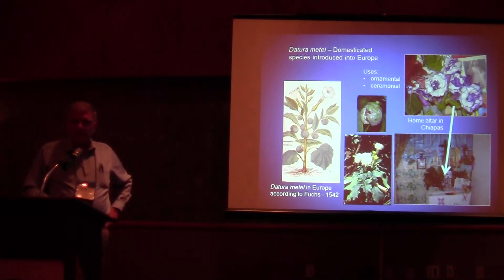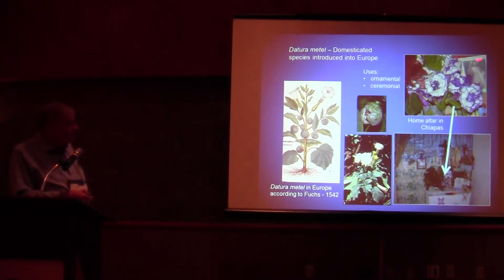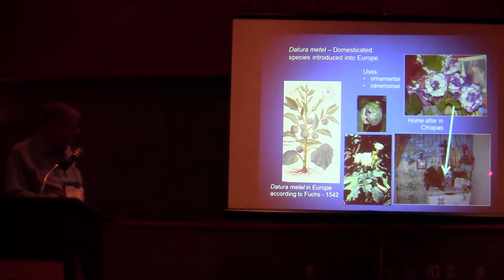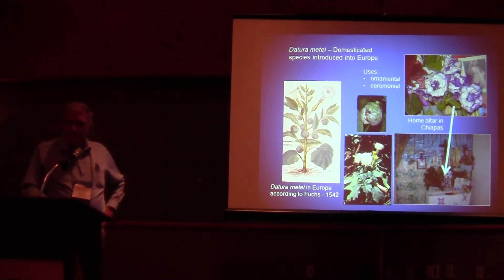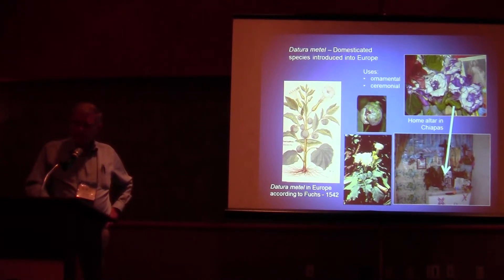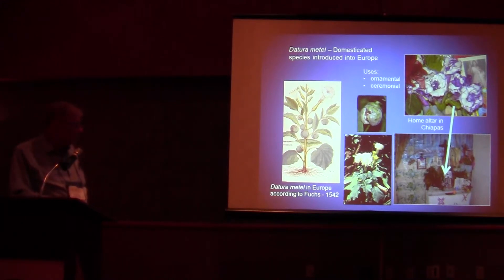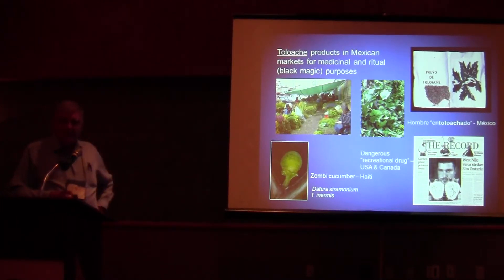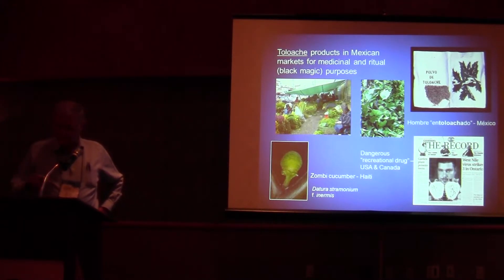In terms of domestication, there is one species that is domesticated — a plant with double flowers that has lost its spines and is not as fuzzy. Here we have, in Jalisco, one of the home altars where it's used as part of ceremonial and home religious activities. It was early documented in Europe as a domesticated plant; however, there are studies now by linguists and an Indian medical botanist who claim this plant may have been present in the South Indian subcontinent a millennia ago. Today, toloache is still used in markets for analgesic and sedative properties, though it is illegal to sell in Mexico.